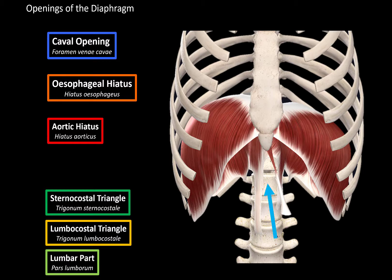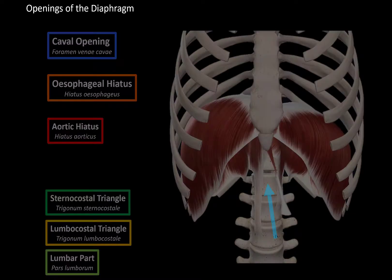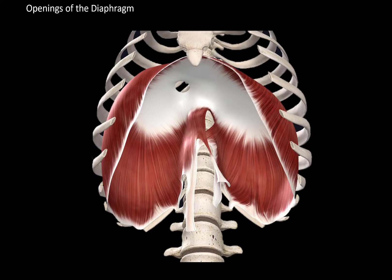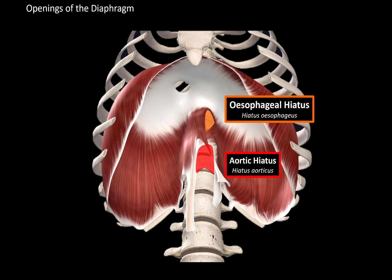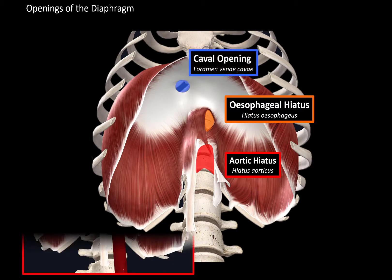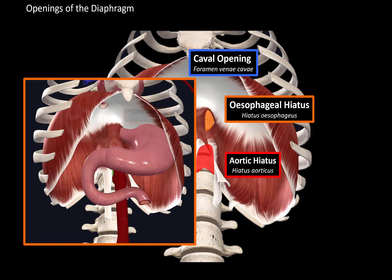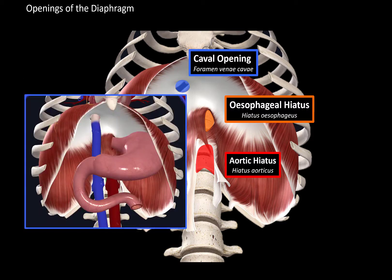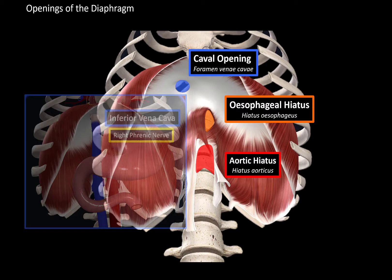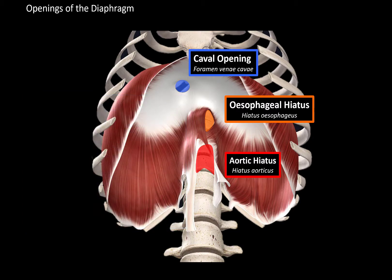Looking at the diaphragm from above, the three main openings are the aortic hiatus, the esophageal hiatus, and the caval opening. From the aortic hiatus, mainly the aorta and the thoracic duct (a lymph duct) pass through. The esophageal hiatus provides an opening for the esophagus to continue as the stomach, as well as a passageway for the vagus nerve. The caval opening provides an opening for the inferior vena cava to bring blood back into the right atrium of the heart, as well as a passageway for the right phrenic nerve.